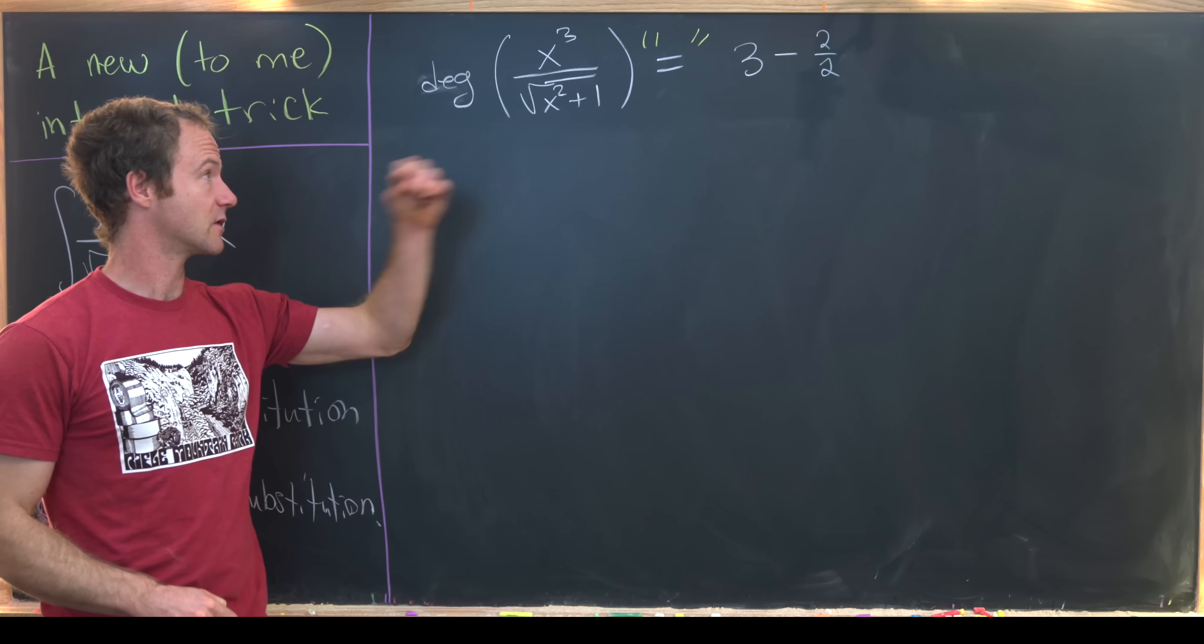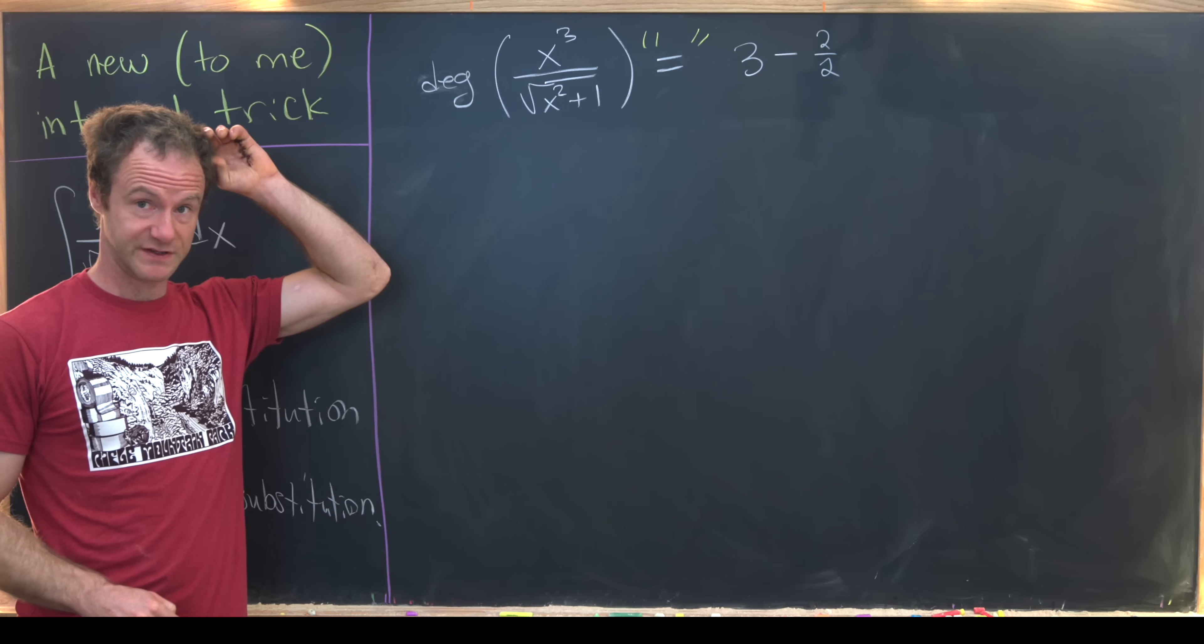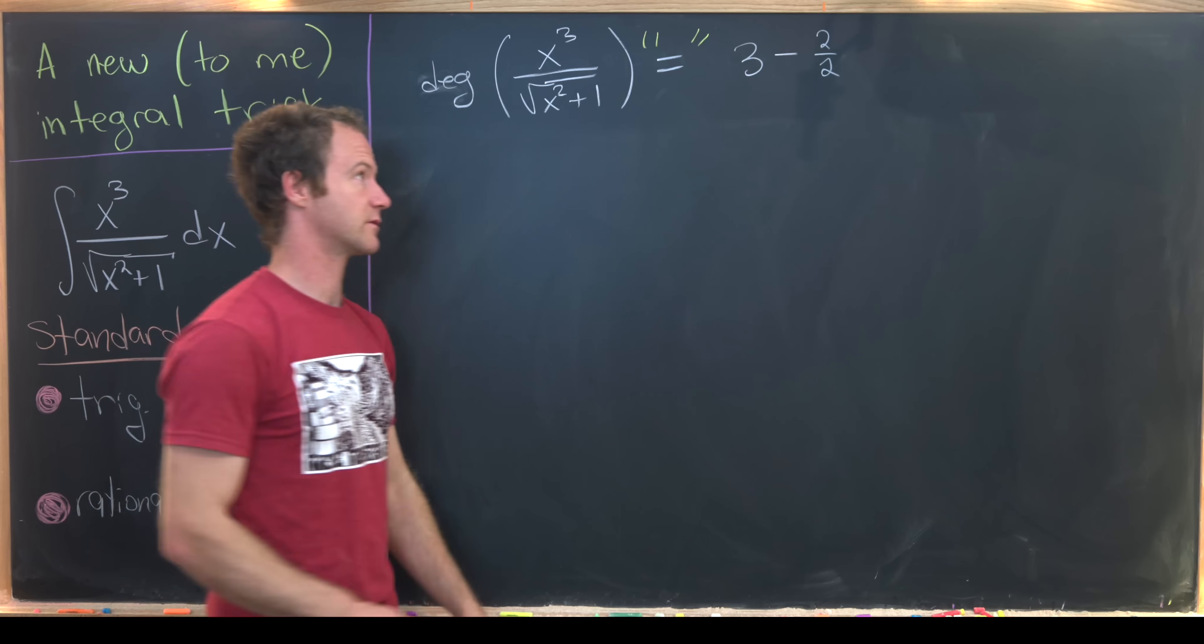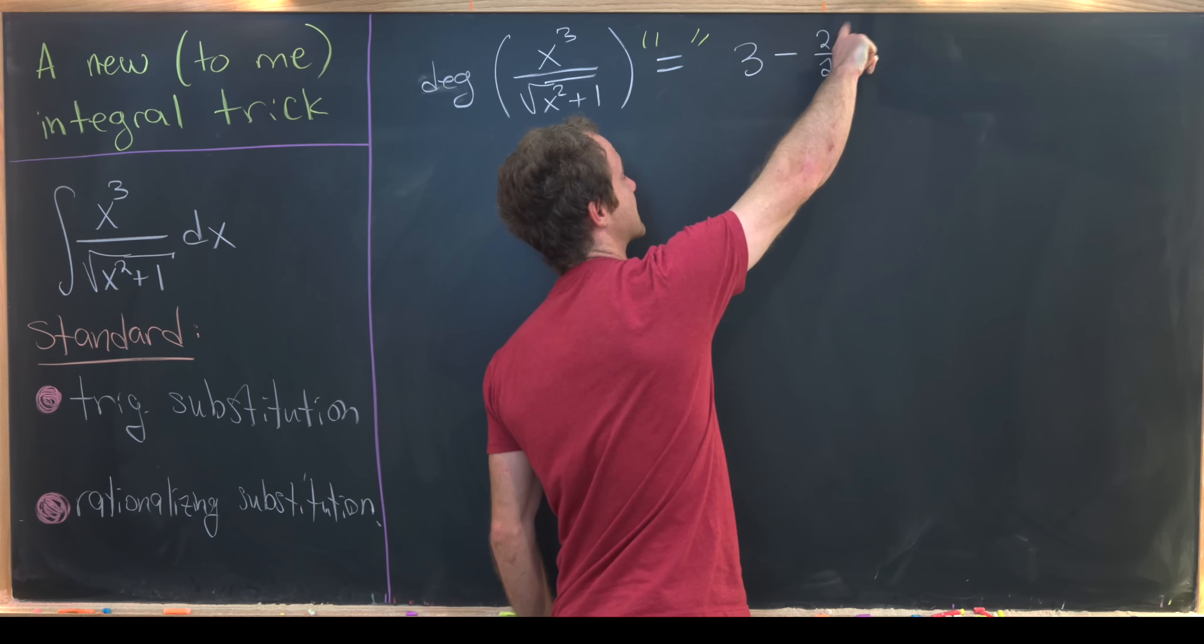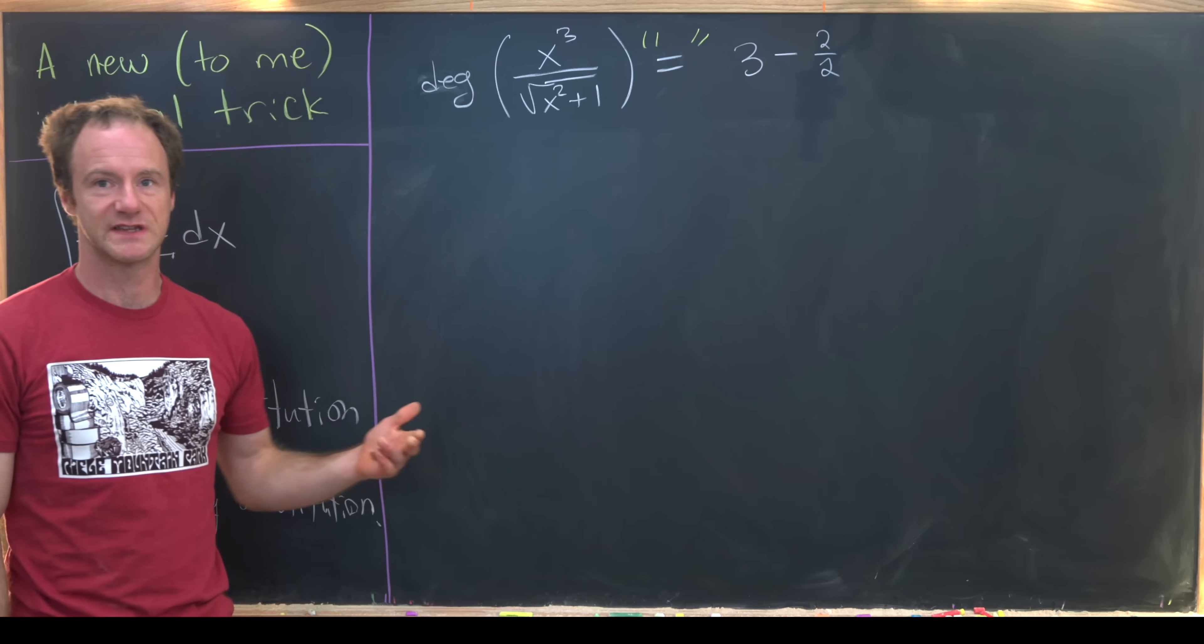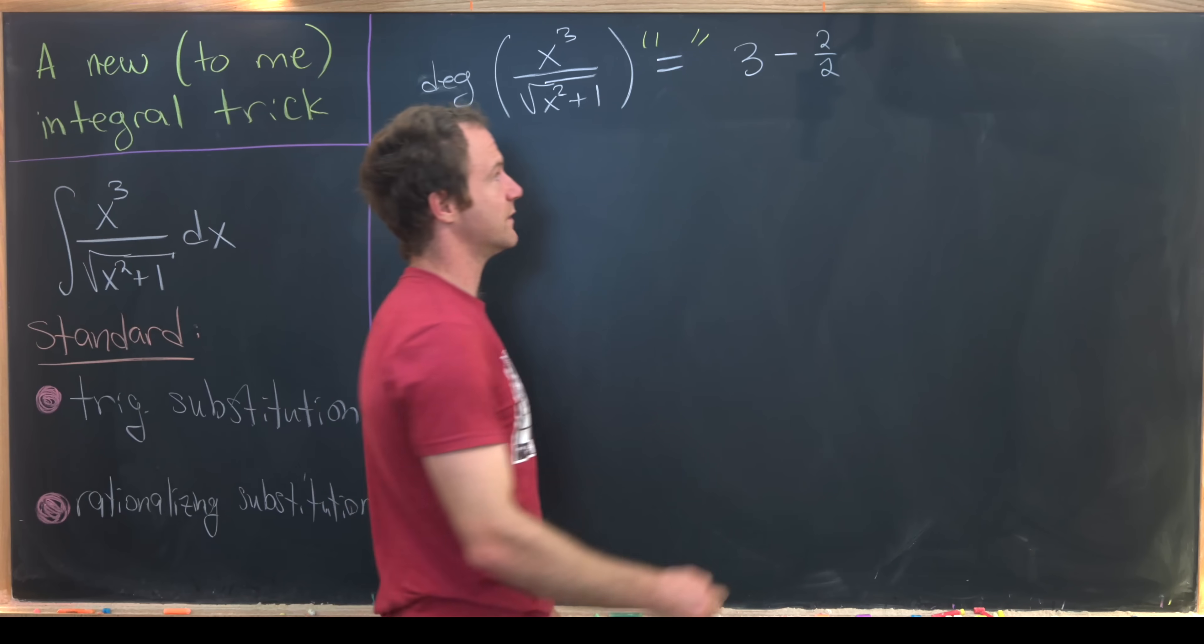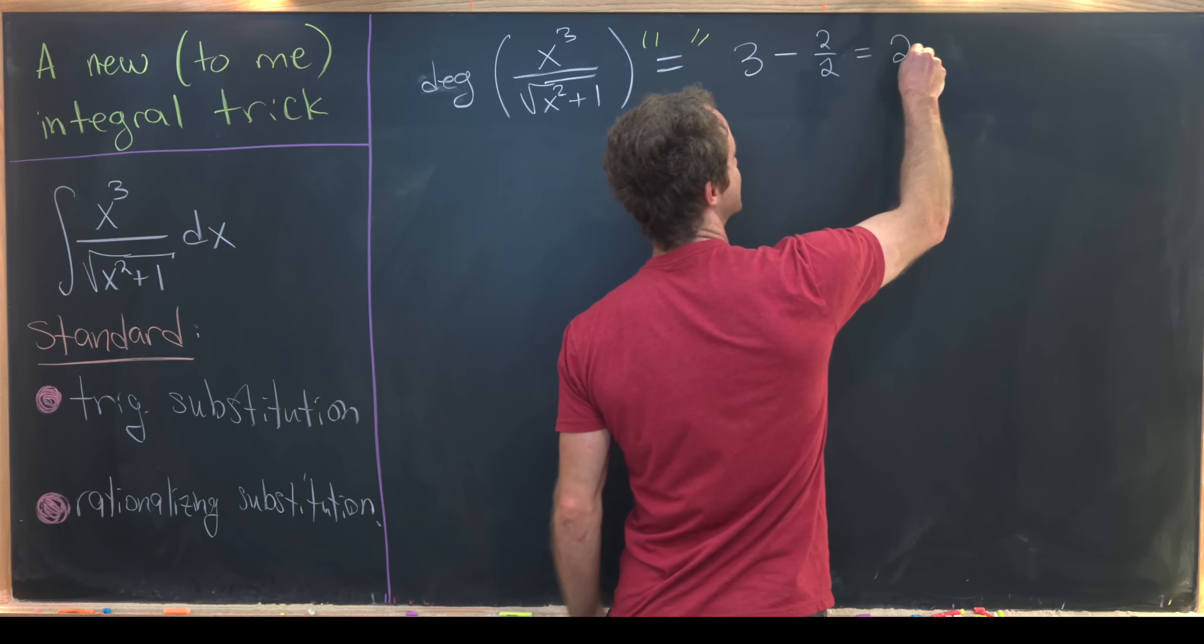And then the degree of the denominator, well, the interior of the square root is 2, but we're taking a square root. So this would be the fact that we've got an x squared, and then the fact that we've got a square root puts that 2 in the denominator. So in the end, we have 3 minus 1, which is 2.